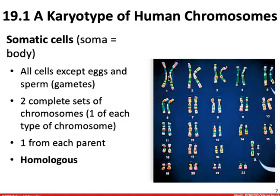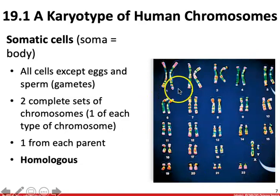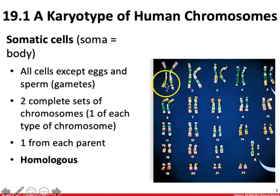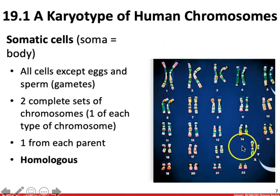Somatic cells are going to be all of the cells in your body except for eggs and sperm. In a somatic cell, we're going to see two complete sets of chromosomes. So in the skin cell of your toes, you're going to have 46 chromosomes present — two of each type of chromosome: two number 1 chromosomes, two number 2 chromosomes, two number 3 chromosomes. You have one set of chromosomes from each parent. I have one number 1 chromosome from my mom and one from my dad; one X chromosome from my mom and one X chromosome from my dad.